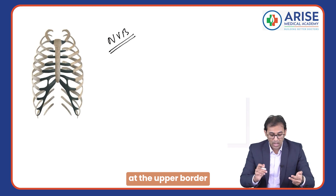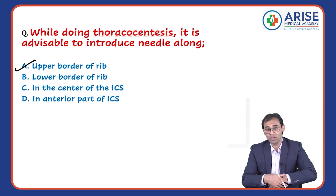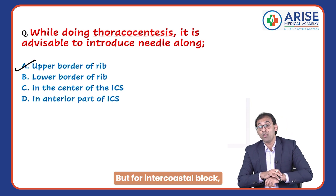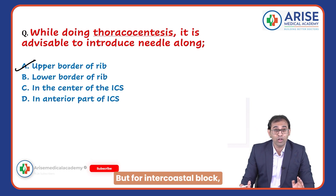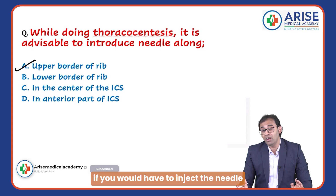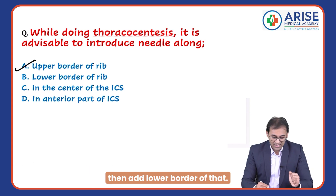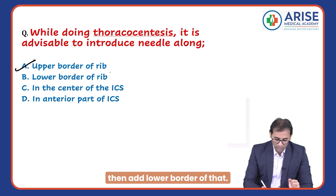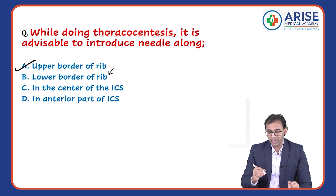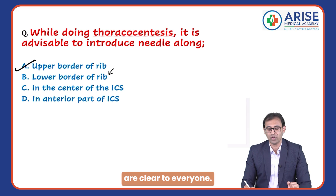That's why for thoracocentesis we insert the needle at the upper border of the rib. However, for an intercostal block — if you have to inject for local anesthesia — you go to the lower border of the rib. I hope all these points are clear to everyone.